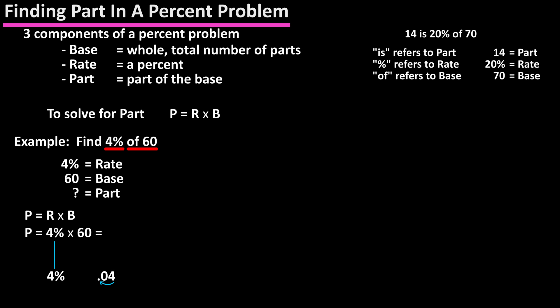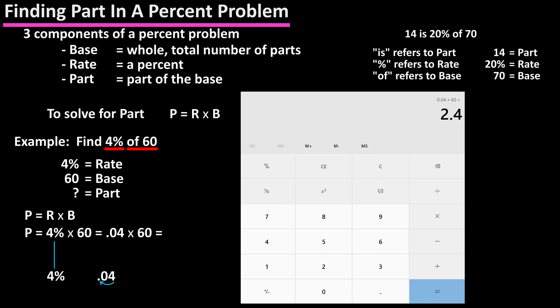Again, we first convert percent to a decimal by dropping the percent sign and moving the decimal point two places to the left to get 0.04. Now using a calculator, we have 0.04 times 60, which gives us a final answer of 2.4.